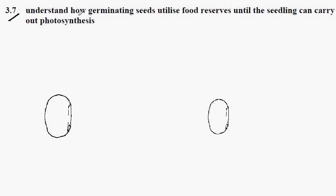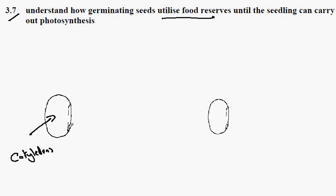3.7: Understanding how germinating seeds utilize food reserves until the seedling can carry out photosynthesis. The food reserves are here in the cotyledons, and the germinating seed will require water, higher temperatures, and oxygen.